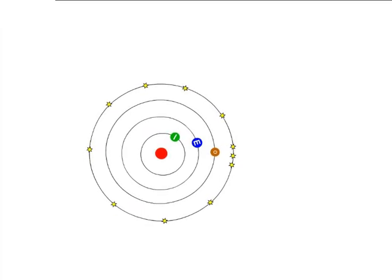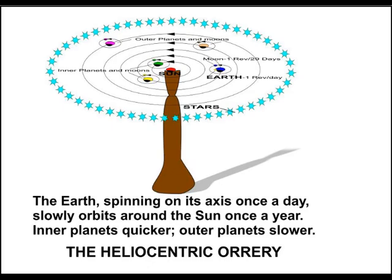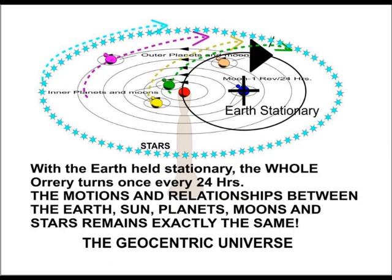So let us restate the situation. The orrery creates the relative movements between the Earth, planets, stars and sun. But if the Earth is held stationary, the whole mechanism rotates around the Earth every 24 hours. But the relationships between the planets and Earth remain exactly the same.